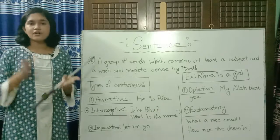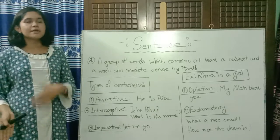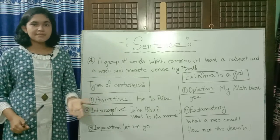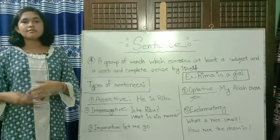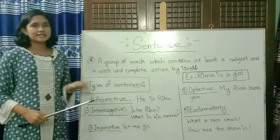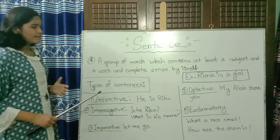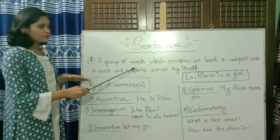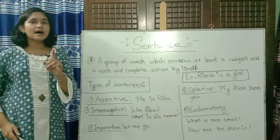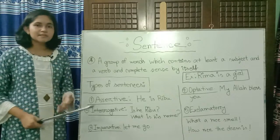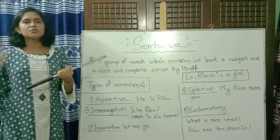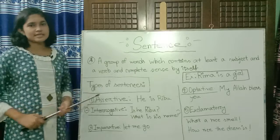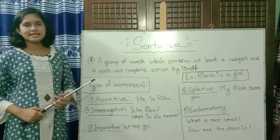A verb includes auxiliary verbs, modal auxiliary verbs, or action verbs like eat, sleep, talk, walk, and many others. So a sentence is a group of words which contains at least a subject and a verb and completes sense by itself — meaning whatever you want another person to understand, you express it through a sentence.